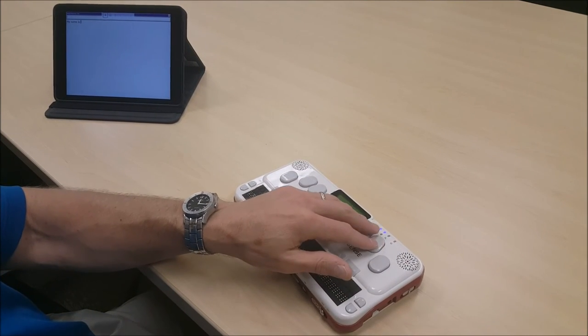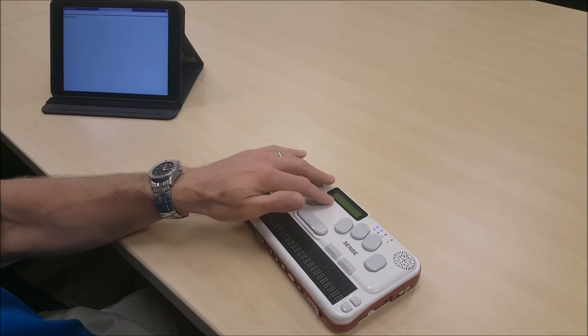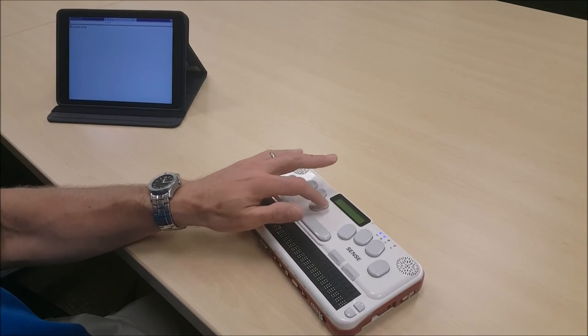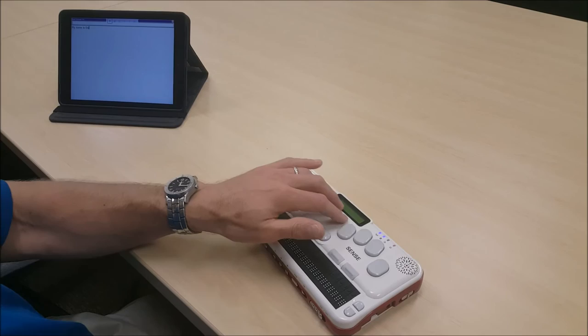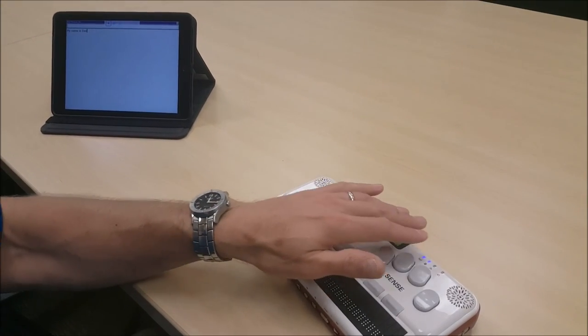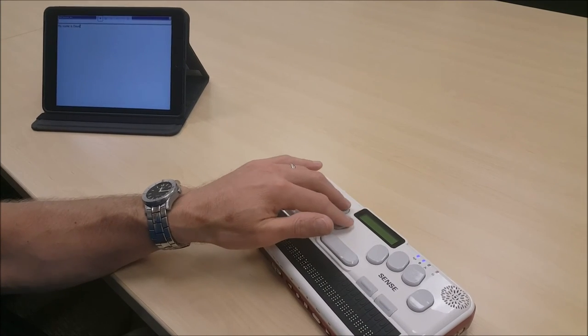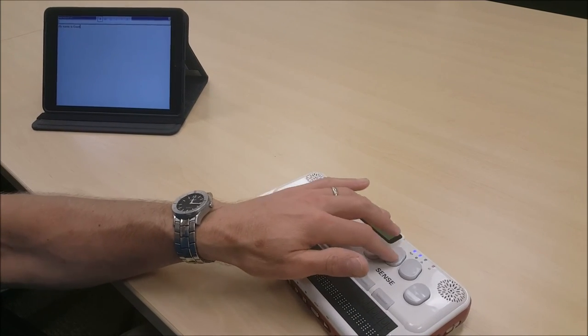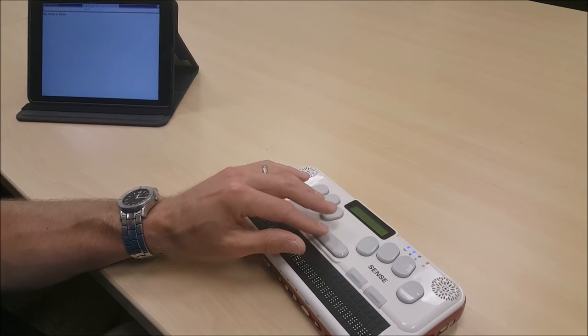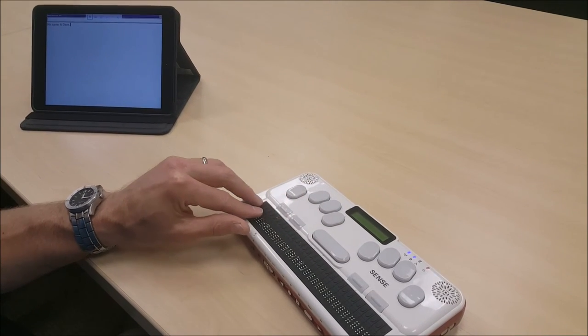Now we'll finish it with Dave, and we'll hit dot 6, space. D, A, V, E. And in case there are grammarians watching, we'll put a period. Now we have my name is Dave.